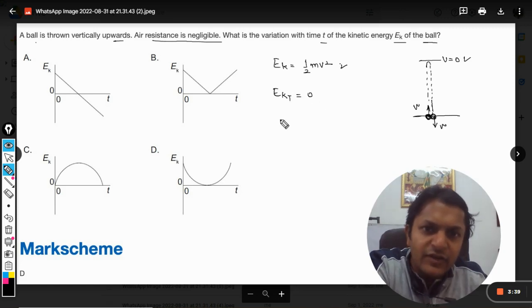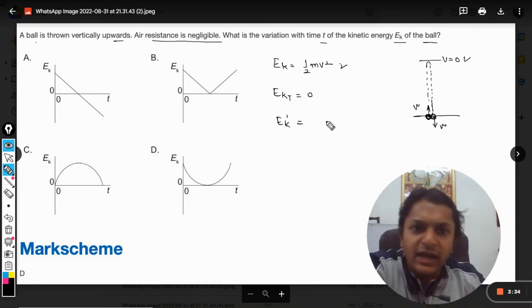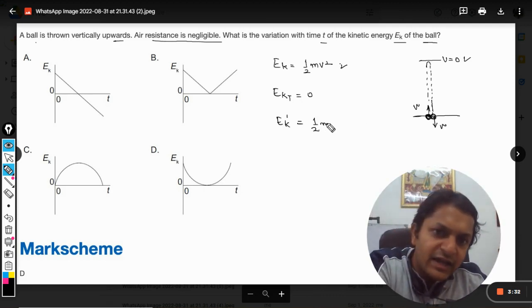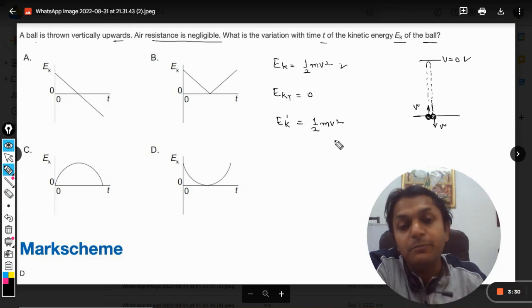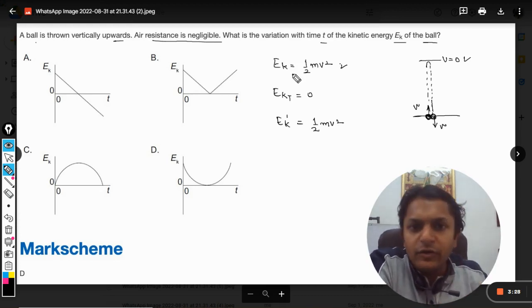Initially the kinetic energy was half m v squared. Later the kinetic energy became zero. Now Ek at the top will be zero. And so Ek dash, that is when it reaches the bottom again, the kinetic energy becomes half m v squared.